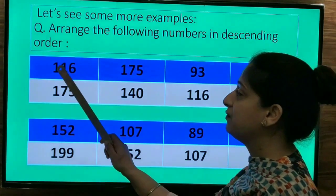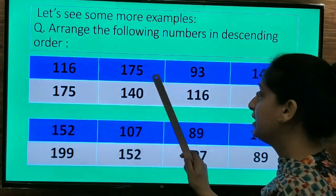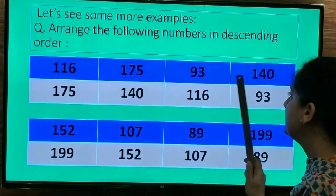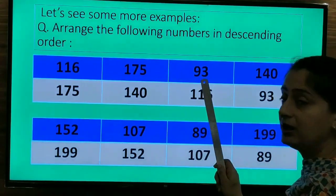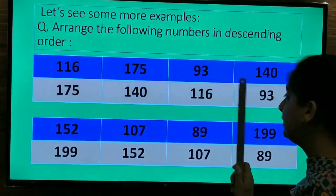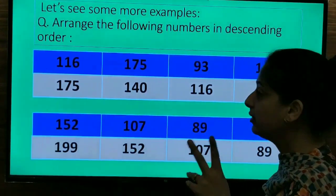Here we will now count the number of digits. 1, 2, 3. 175 has 1 to 3 digits. 93 has 2 digits. And 140 has 3 digits. So the number 93 will come in the end because it has 2 digits. So it's the smallest number.